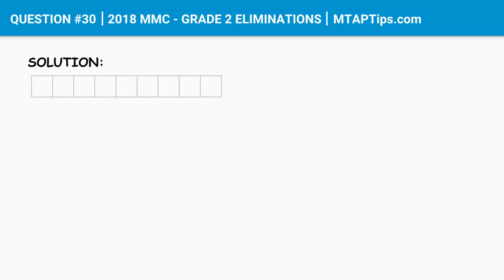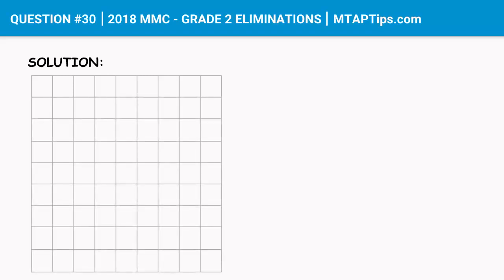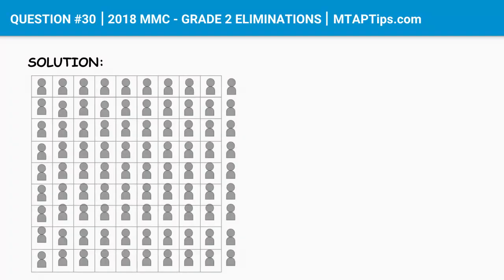Let's imagine this is the first row the janitor set up, and in each column there are 9 chairs as well. Let's say these are the 90 students. And if you notice, the children in the last column on the right don't have chairs. That's the number we need to find.